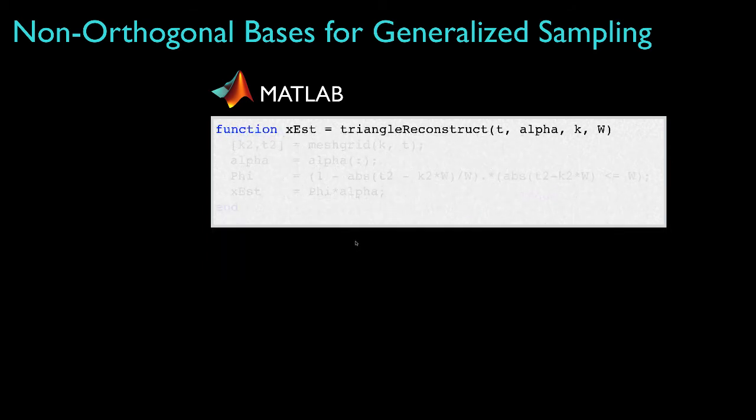To reconstruct the signal from its samples, I'll need a function that takes as input the sample coefficients alpha, the basis indices at which the coefficients were obtained k, the width of the triangle functions w, and an array of times t at which I'd like to evaluate the reconstructed signal.